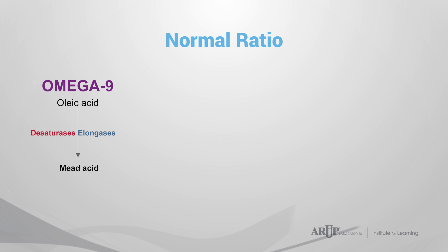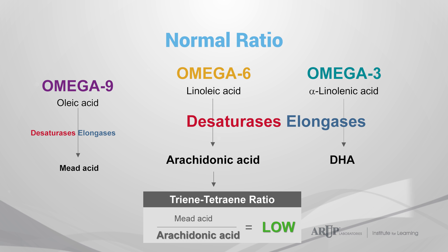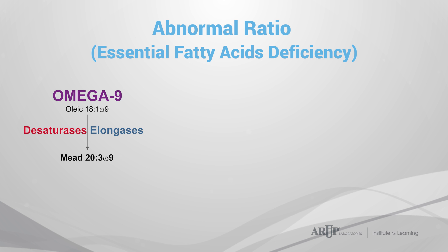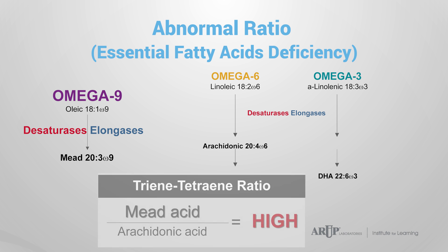Normally, conversion of omega-9 mead acid is very inefficient because desaturases and elongases preferentially function in the omega-3 and omega-6 metabolic pathways. Therefore, the concentration of mead acid is low and the ratio is low as well. In contrast, in patients deficient in omega-3 and omega-6 fatty acids, the metabolism of arachidonic acid is augmented by the availability of enzymes to act in the omega-9 pathway. As a result, mead acid is produced in increased quantities compared to arachidonic acid and the ratio is high.